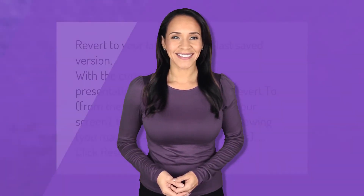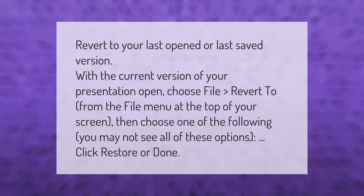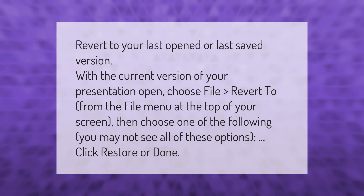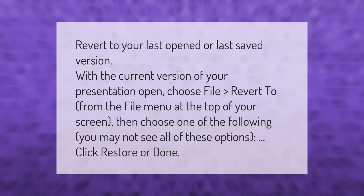To revert to your last opened or last saved version, with the current version of your presentation open, choose File > Revert To from the File menu at the top of your screen. Then choose one of the following options — you may not see all of these options. Click Restore or Done.